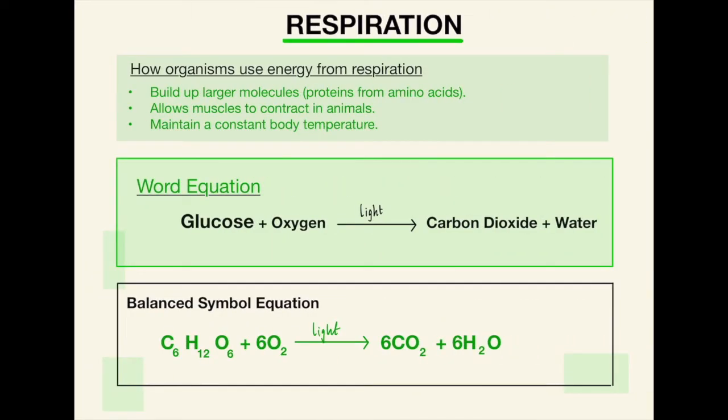Next we have respiration. Again a very very important part of paper 1 biology. So how organisms use energy from the respiration. They build up larger molecules, so proteins from those amino acids. This would also be carbohydrates from simple sugars and stuff like that. It allows the muscles to contract in animals and it allows them to maintain a constant body temperature.